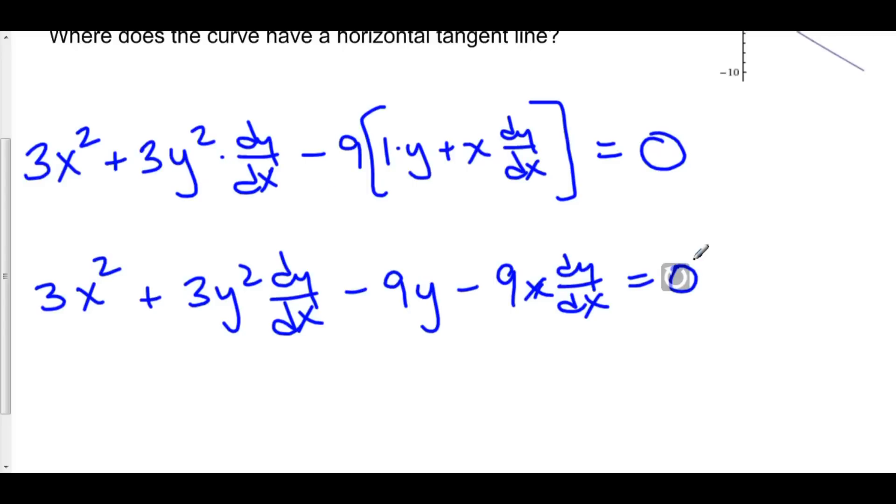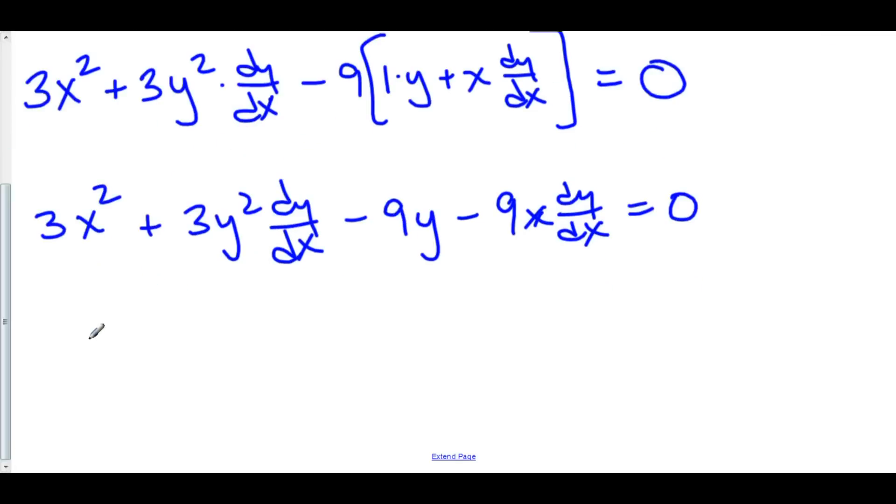So we'll keep all terms with the dy/dx on the left hand side. And we'll move the other terms over to the right hand side. Yielding 3y squared dy/dx minus 9x dy/dx is equal to 9y minus 3x squared.